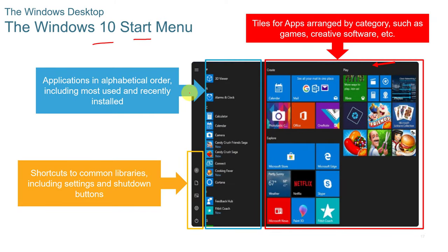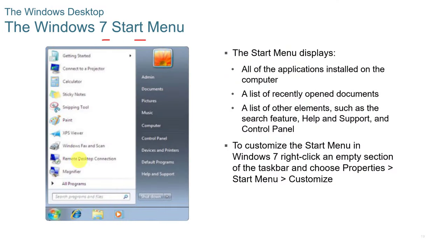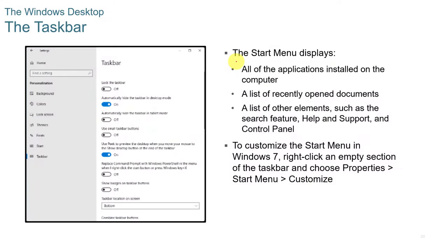On the Windows 10 start menu, applications are in alphabetical order. Clicking the start button pops them up, and shortcuts to common libraries including settings and shutdown buttons are on the left-hand side. The Windows 8.1 and 8.0 start menu had a limited start menu. Windows 7 had pop-up applications not in alphabetical order. You could customize the Windows 7 start menu by right-clicking an empty section of the taskbar and choosing Properties > Start Menu > Customize.